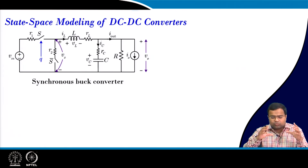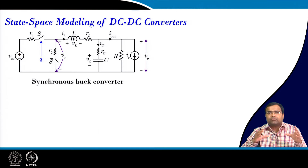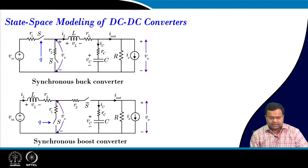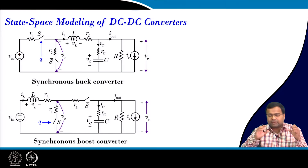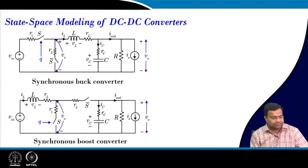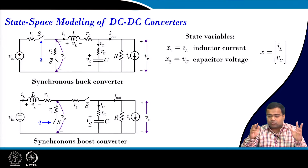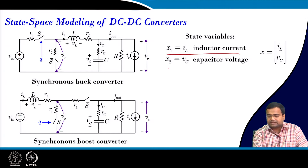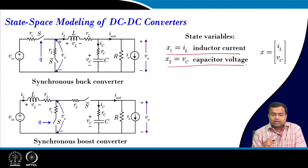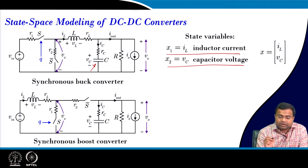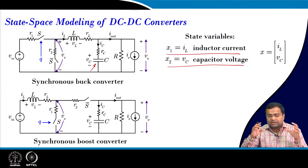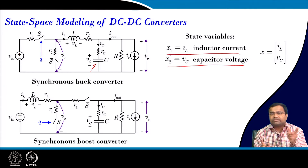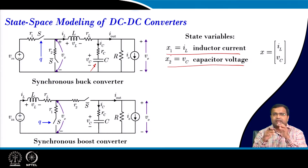Here I will talk about two converters: a synchronous buck as well as a synchronous boost converter. This converter detail model we have already discussed — it is a more or less practical converter with synchronous configuration. Here we are considering two state variables: one is the inductor current and another is the capacitor voltage. We are considering capacitor voltage as the state variable because we do not want the state to be discontinuous at the point of switching.